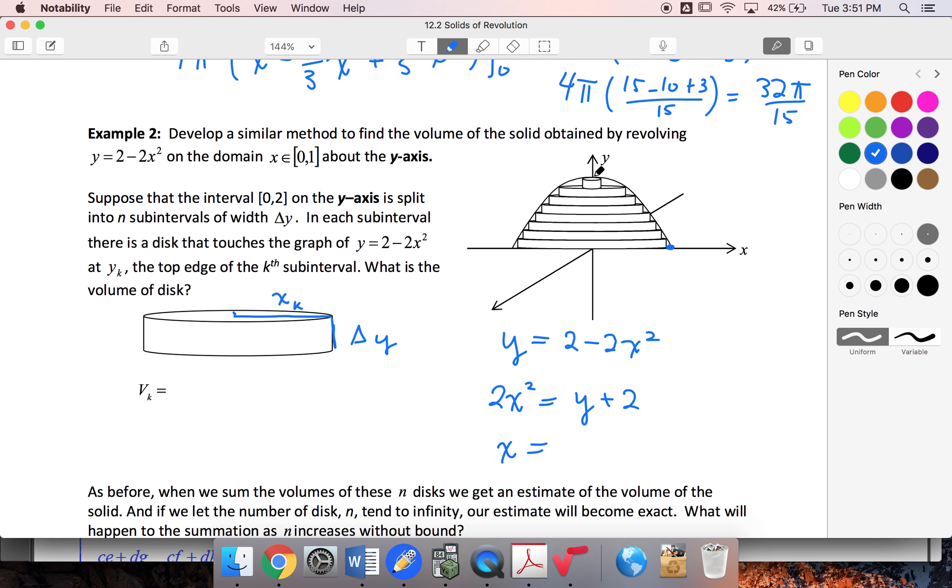so from this area, my x is going to be equal to the square root of y plus 2 over 2. So this is going to be my radius.